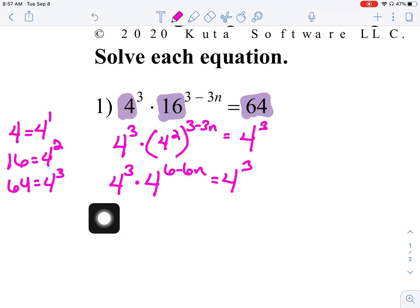All right, on the left side, we have like bases being multiplied, so we can add the exponents. So, 4 to the 9 minus 6n equals 4 to the third.